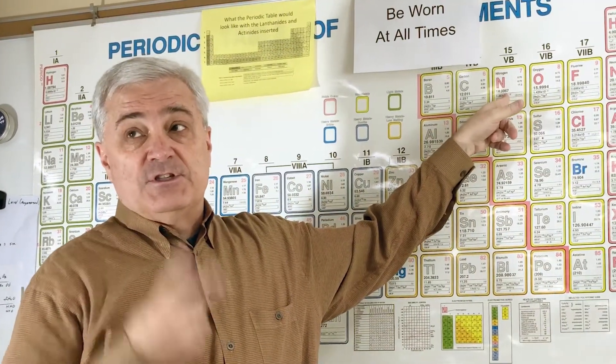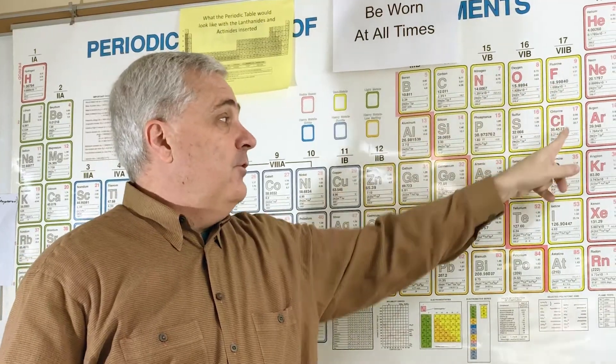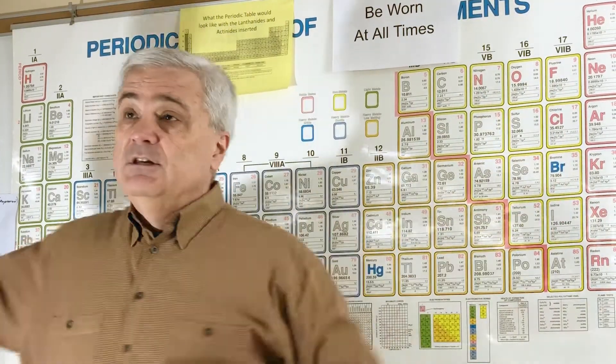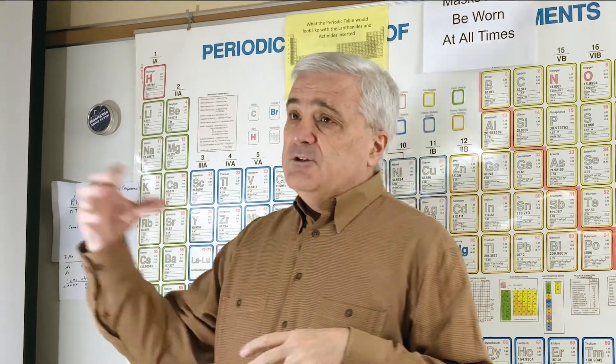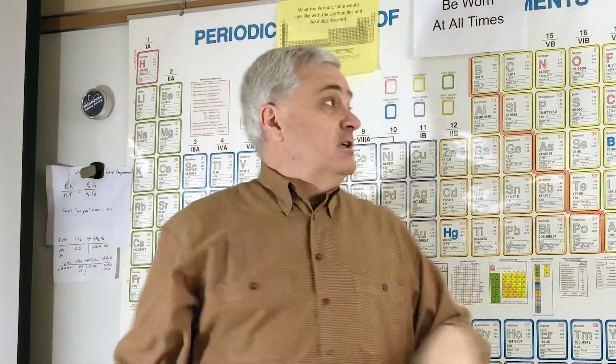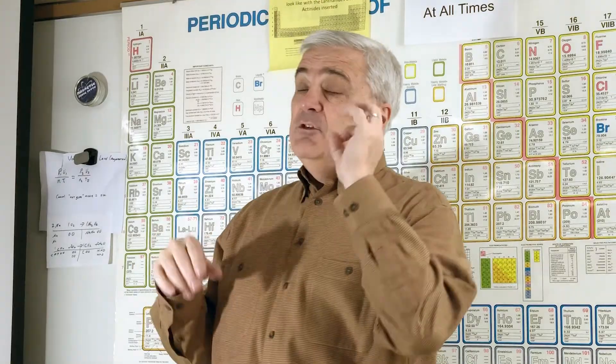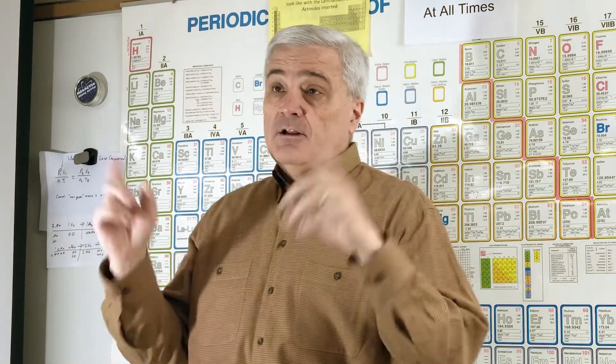Starting with number seven, count one, two, three, four, five, six, seven — then throw in hydrogen. That's it. Hopefully this will help you remember what they are when you're doing chemical equations and balancing them. For example, if your product is oxygen, it'll never be O1 — it'll always be O2, and the same goes for chlorine and all those others.